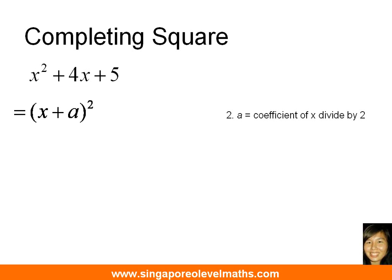This is how the completed square form will look: it will consist of (x + a)². Your job is to get the value of a. To get the value of a, we focus all our attention on the coefficient of x, which is 4, and what you need to do is divide it by 2.